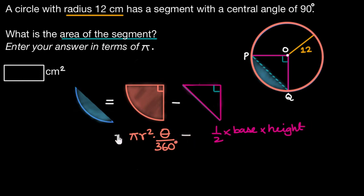So here we have πr². r is given to us as 12 centimeters, so πr² is π times 12 times 12. θ is 90 degrees, so θ/360 is 90 degrees by 360 degrees. Let's simplify this.